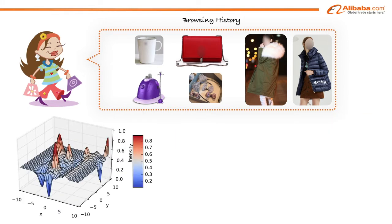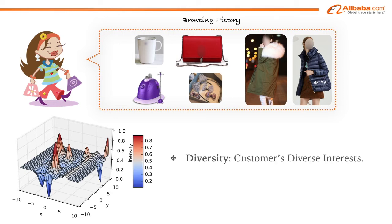However, the user representation vector with a limited dimension in embedding and MLP methods will be a bottleneck to express users' diverse interests. Take display advertising in an e-commerce site as an example: users might be interested in different kinds of goods simultaneously when visiting the site. That is to say, users' interests are diverse, and it is hard to capture diverse interests in a fixed-length vector.